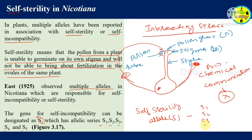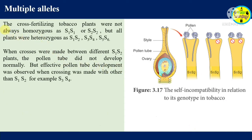The cross-fertilizing tobacco plants were not homozygous like S1S1 or S2S2, but all plants were heterozygous like S1S2, S3S4, or S5S6. When crosses were made between different S1S2 plants, the pollen tube did not develop normally. But effective pollen tube development was observed when crossing was made with other genotypes, for example S3S4.